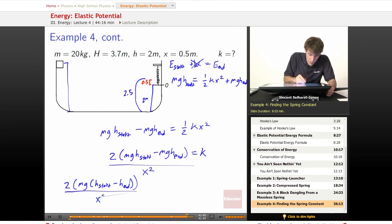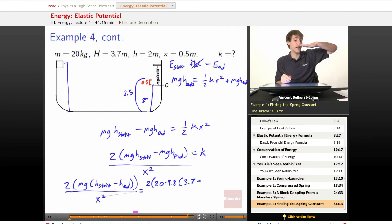Over x squared is equal to 2 times what's m, 20, what's g, 9.8, times what's h at the start, 3.7, what's the height at the end? That's the amount that the bottom of the spring is, plus the 0.5 that it went up beyond that, right? Because it compressed the spring 0.5 past equilibrium. So it had to make it up to equilibrium, 2 meters, and then it had to go a little bit farther to 2.5 meters off the bottom. So minus 2.5.